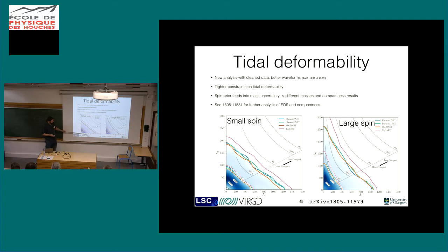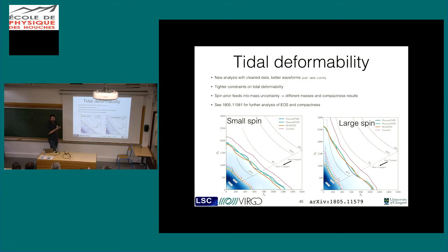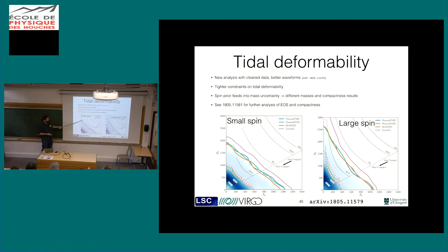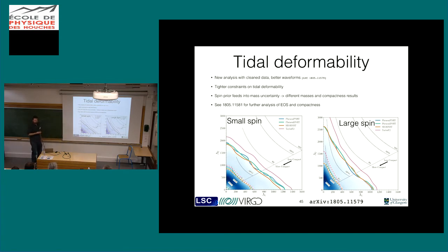If you plot these lambda parameters - the tidal deformabilities of the two stars, lambda 1 and lambda 2 - and allow them to vary independently, you can set a constraint on this joint parameter space that ends up pushing it downwards into the lower values of lambda. You can do the same analysis allowing for the small spin or the large spin, and the results do change quite a bit because the mass is involved in the calculation of lambda.